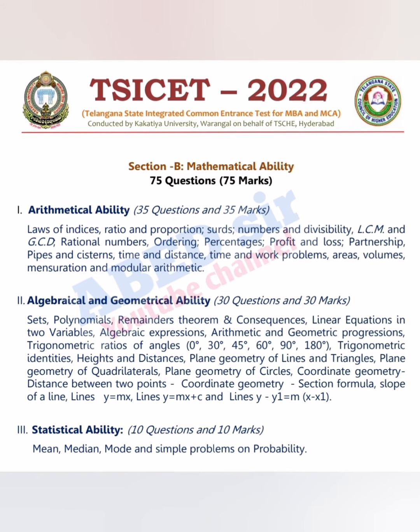The second exam, that is Session B, has 75 marks. You can see on screen from which topic how many questions are asked and how many marks are allotted to the topic. In total, 75 marks you will get from Session B. Topic-wise marks you can see on screen.